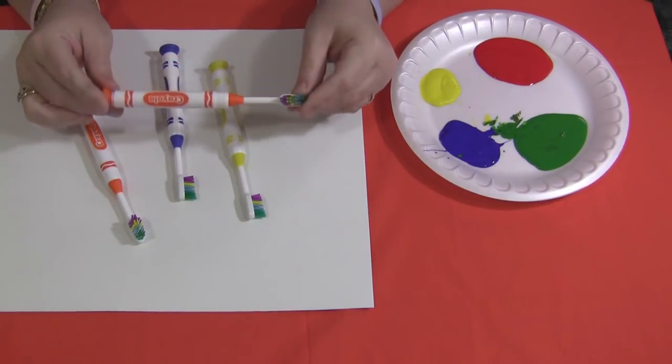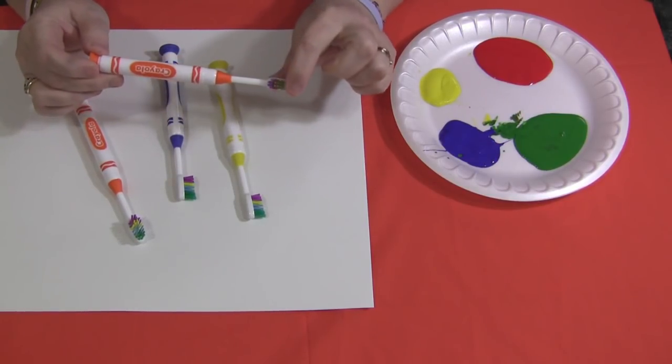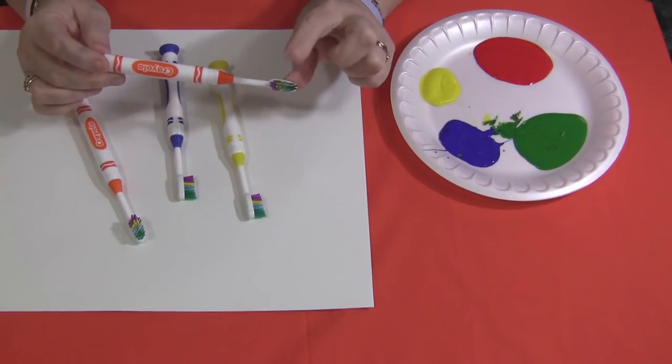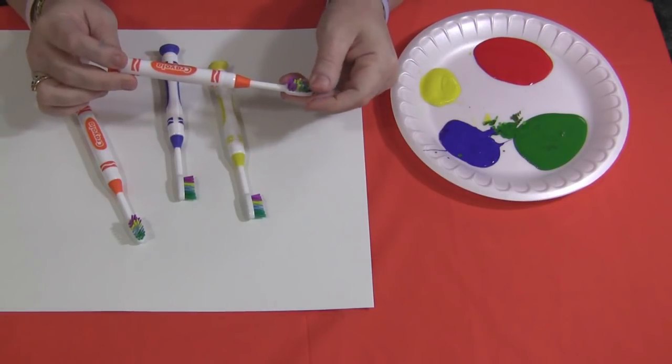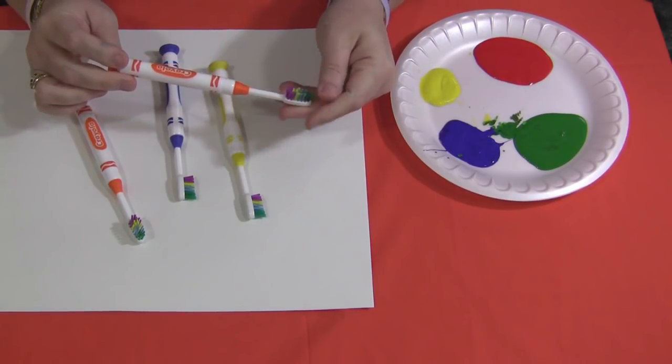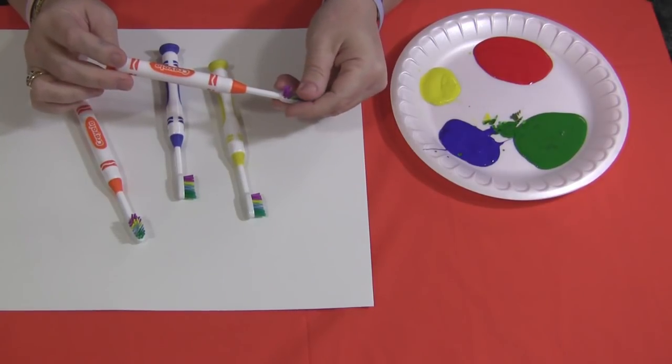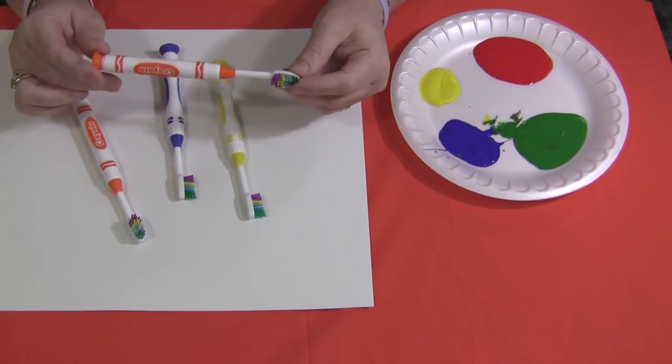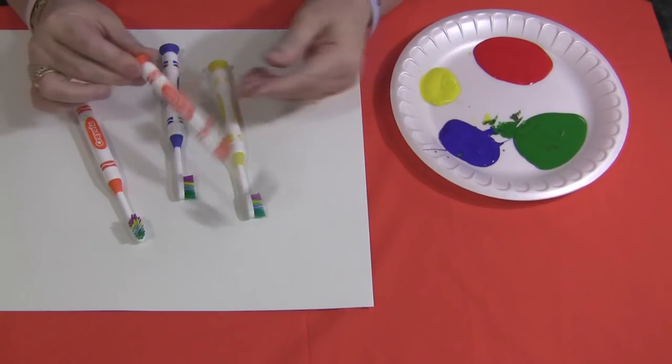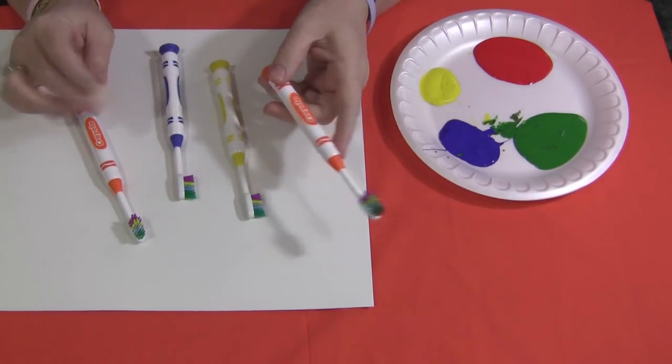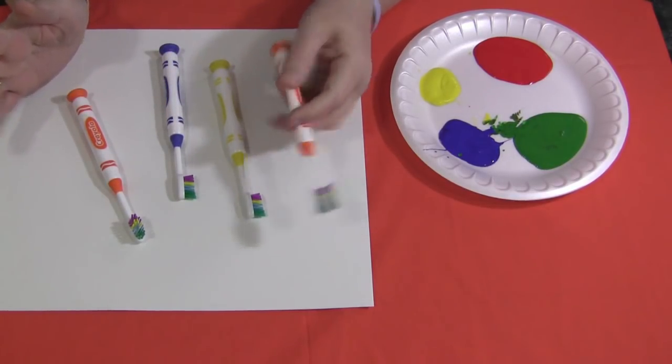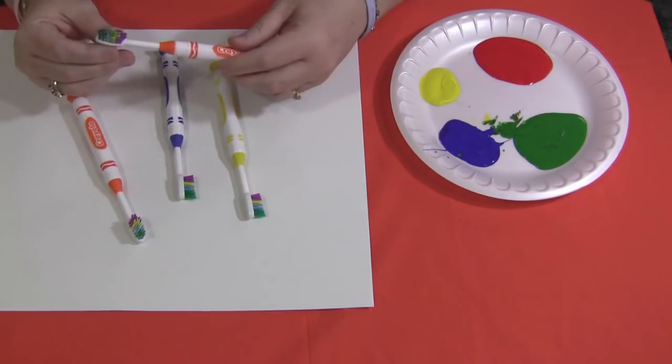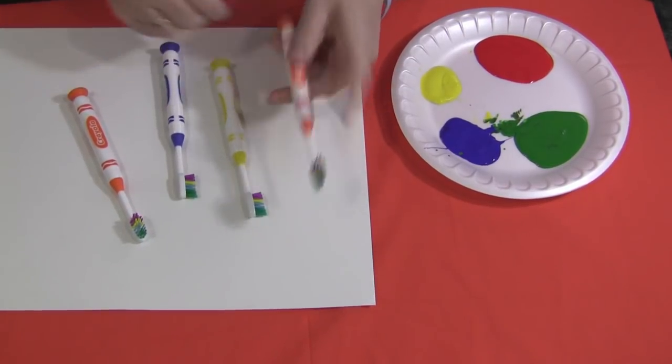I do recommend that you purchase the toothbrushes that have more of a flat head. There are many out there now that have raised and different levels of bristles, and the flat ones seem to work better for the children. They can get more paint on with the flatter heads. These are just children's toothbrushes that I purchased at Walmart, a package of two for about $2.50, so about $1.25 each. Not a bad investment for an art center that the children will get lots of enjoyment out of.